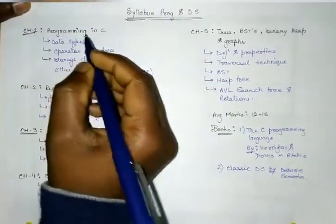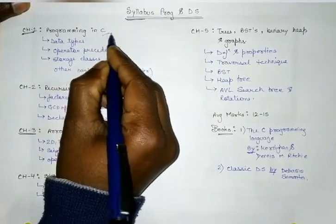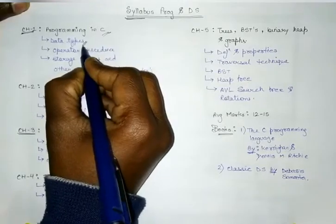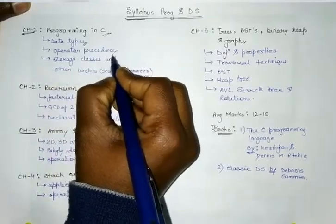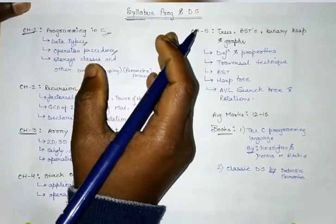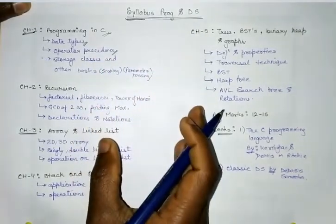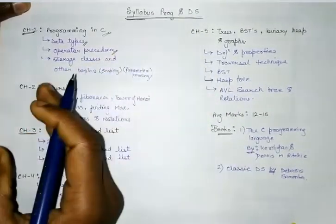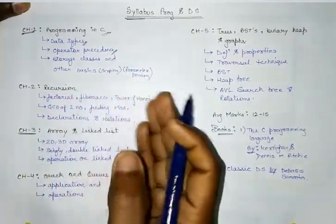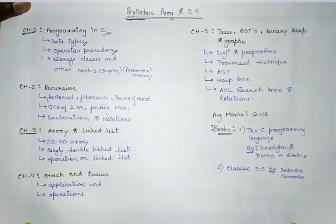First thing we have to cover is the basics of programming. That is what are the different data types we have, what is the precedence of the operator, that is addition, subtraction. There are so many operators in the programming language. So we have to know the associativity, whether they are right to left or left to right, and also we have to know the precedence of the operator. This will help us in solving any program or any equations that you have within the program.